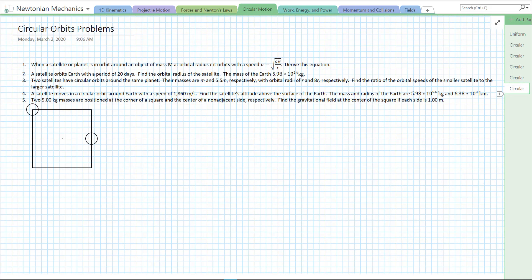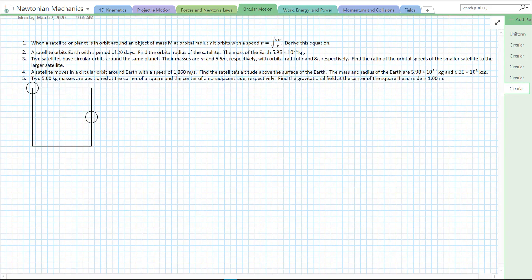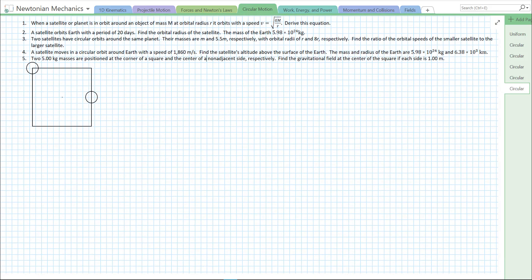Last question. Two 5.00 kilogram masses are positioned at the corner of a square and the center of a non-adjacent side, respectively. Find the gravitational field at the center of the square if each side is 1.00 meters.